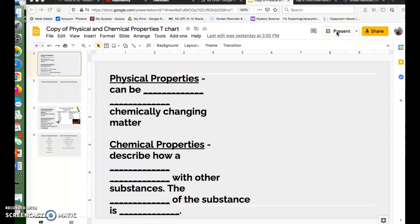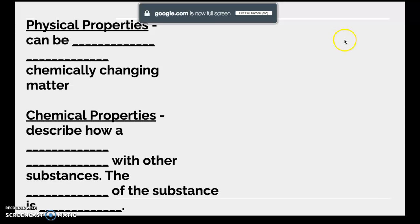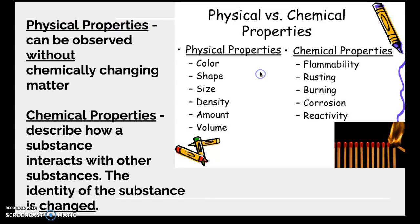All right, today you are going to be completing a chart on chemical and physical properties as well as another small assignment which I'll show you in just a second. So let's go through those physical and chemical properties. This is what you're actually filling out. You've got a copy of it on Canvas for yourself and then we're going to do this t-chart together, kind of distinguish between physical and chemical properties.